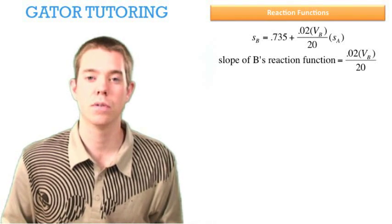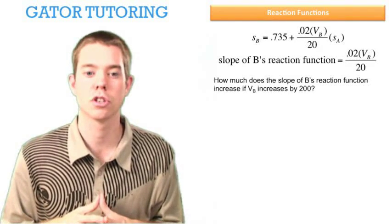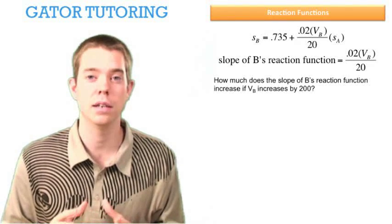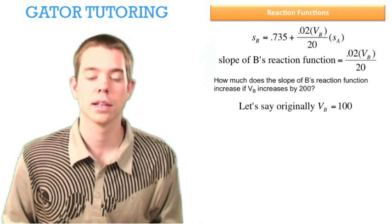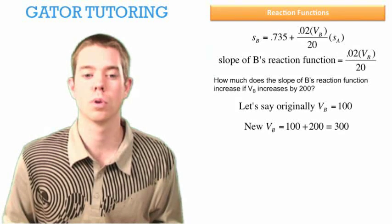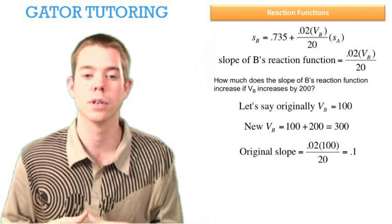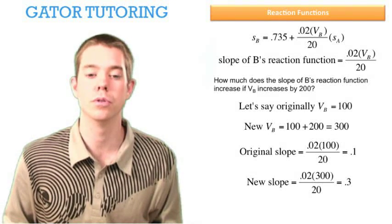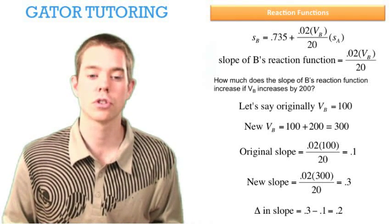So with that said, we can now revisit the question which said, how much does the slope of B's reaction function increase if VB increases by 200? We can pick any point we want. I'm going to choose 100, it just makes things nice and round. Let's say originally VB was equal to 100. Well, the new VB then would be 100 plus 200 or 300. So originally slope was 0.02 times 100 divided by 20, which equaled 0.1. The new slope is 0.02 times 300 divided by 20, which equals 0.3. So the change in slope is 0.2.